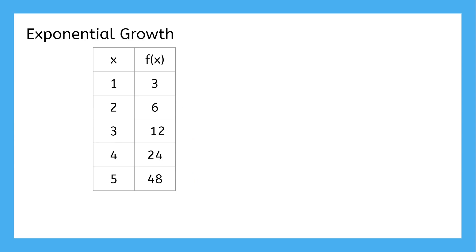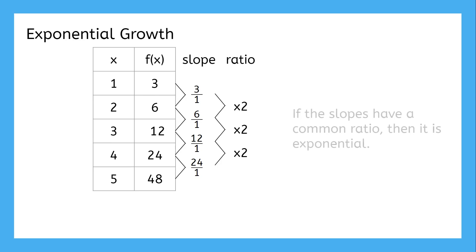This data is very clearly not linear. The slope keeps getting higher and higher. But I think I see a pattern here. The slope keeps doubling. This is how we can recognize exponential growth. The slopes are not constant, but rather have a common ratio, just like when we learned about sequences.